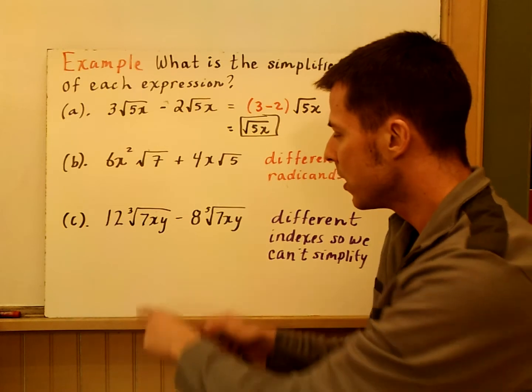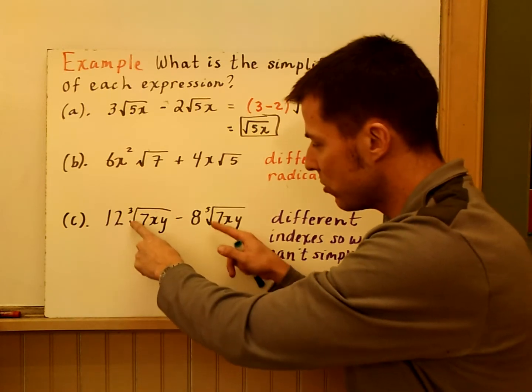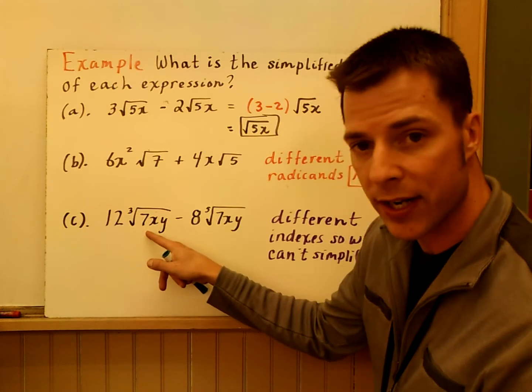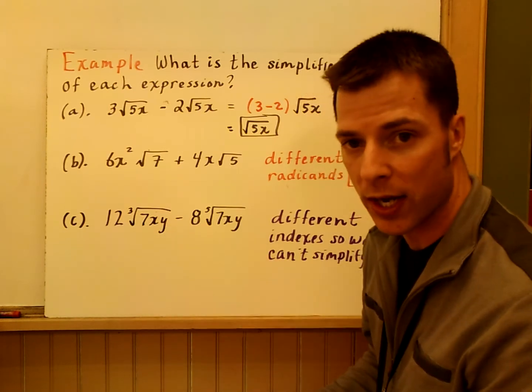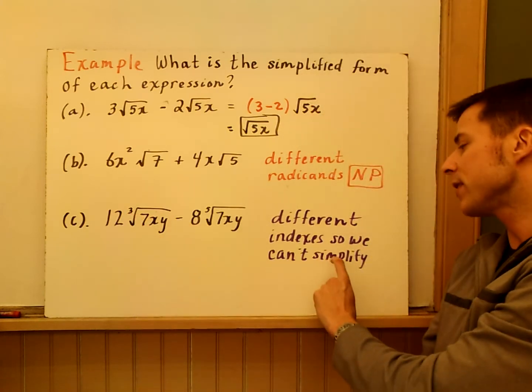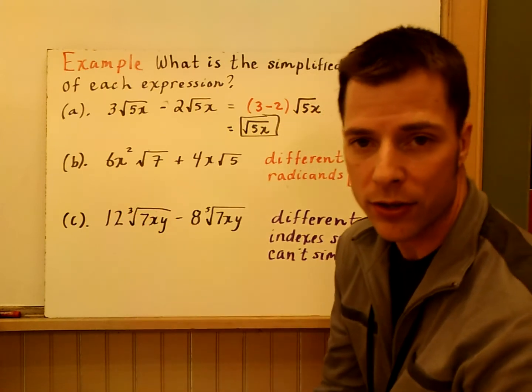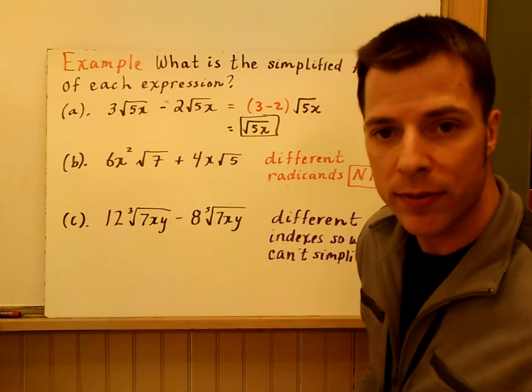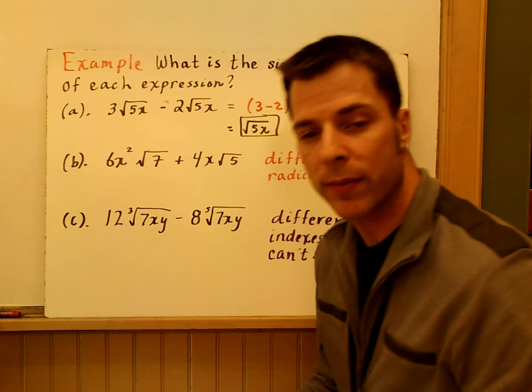Lastly, here's another example. You have the same radicands, but then you have different indexes. 12 times the cube root of 7xy minus 8 times the fifth root of xy. Yes, they're both odd, but 3 and 5 are not equal, so they're different indexes. You can't combine those either. This is just an example here, number 1, of the sum and difference properties, that distributive property.